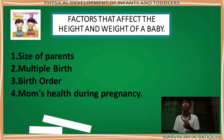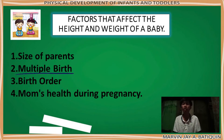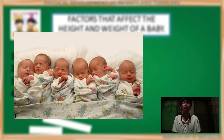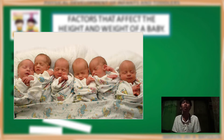The second factor is multiple birth. If a baby has a twin, triplets, or more, the babies might be a little bit smaller because they share their growing space in the uterus.